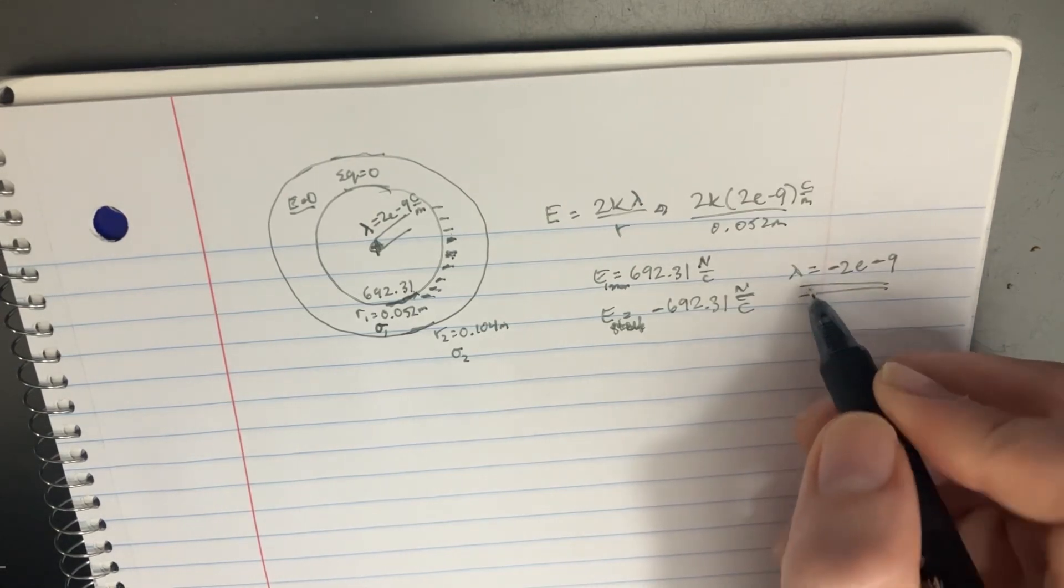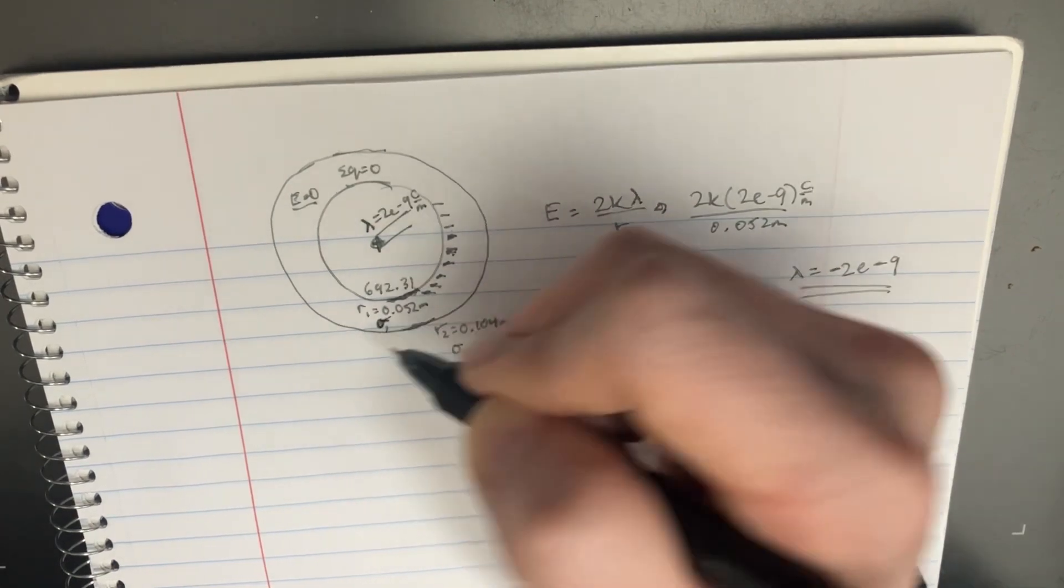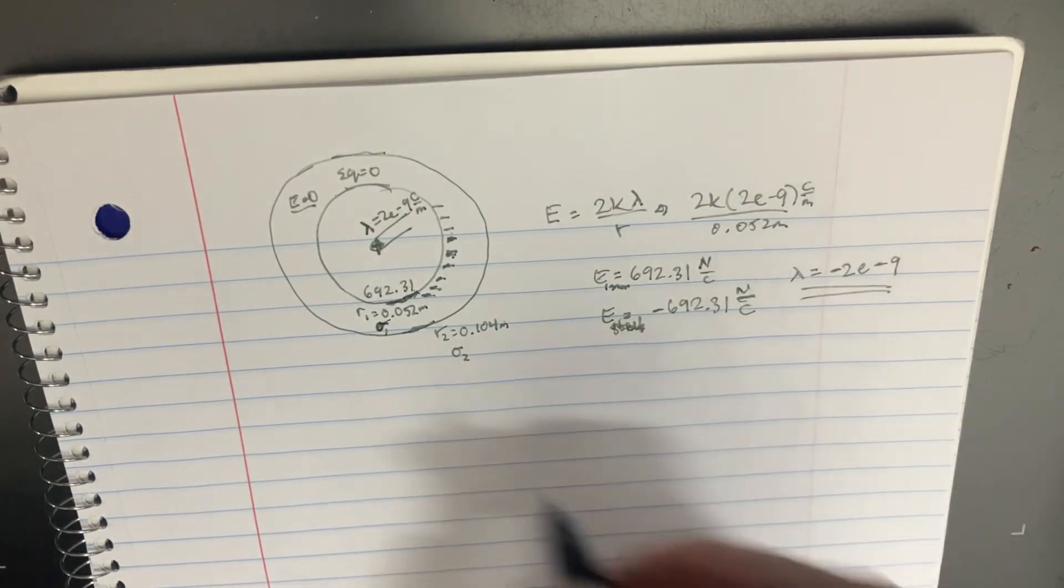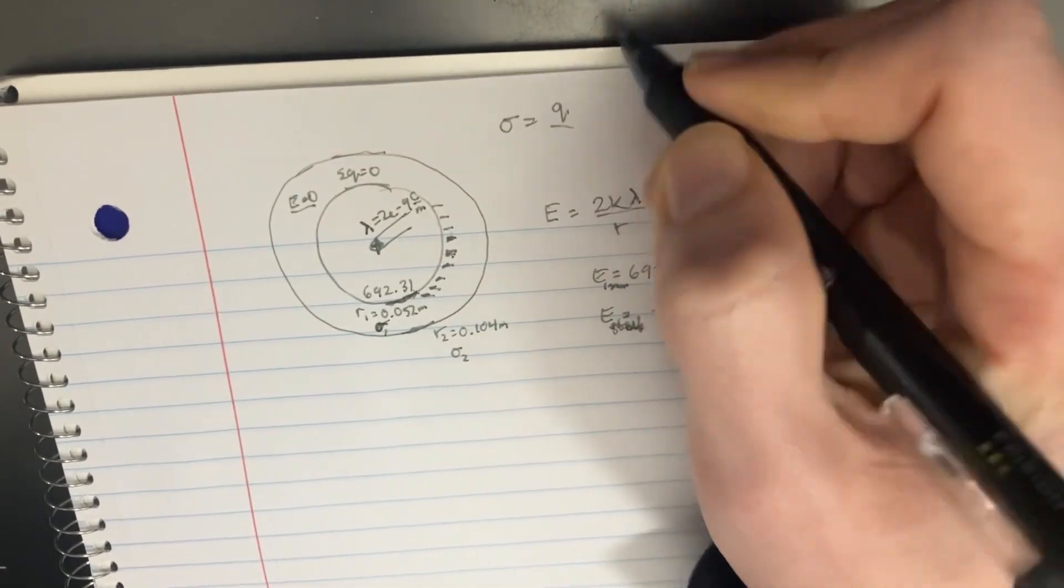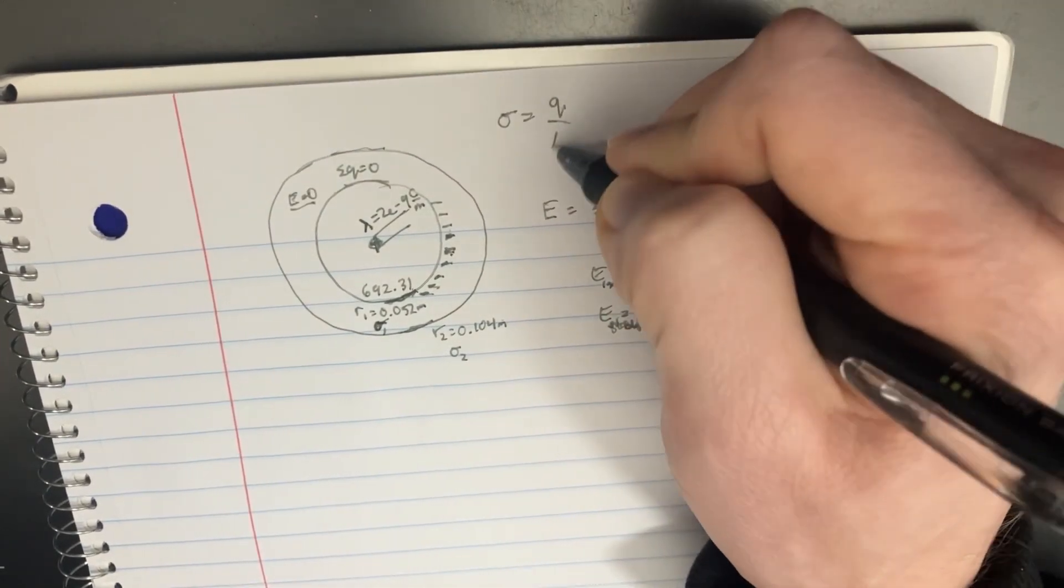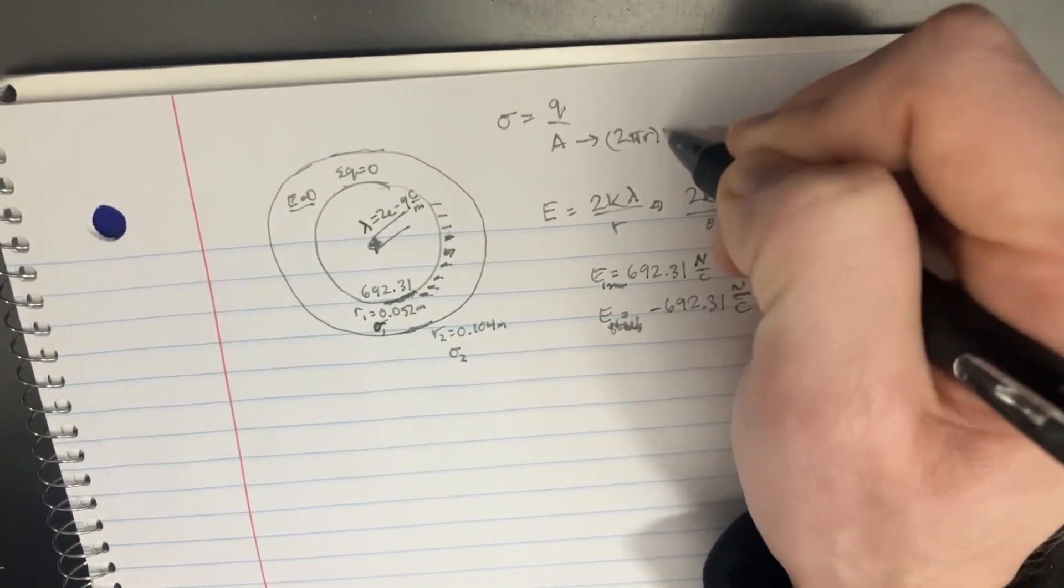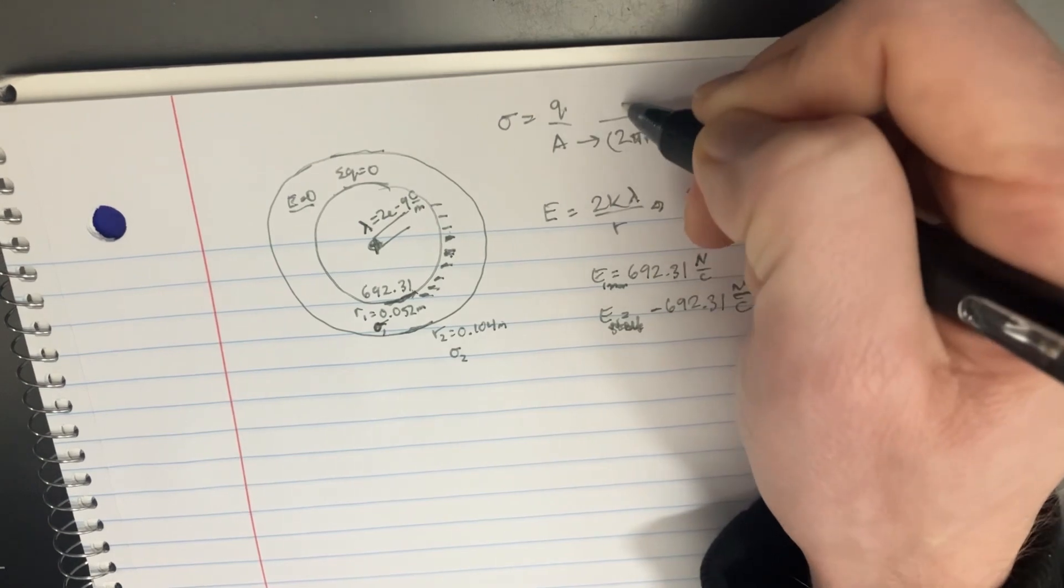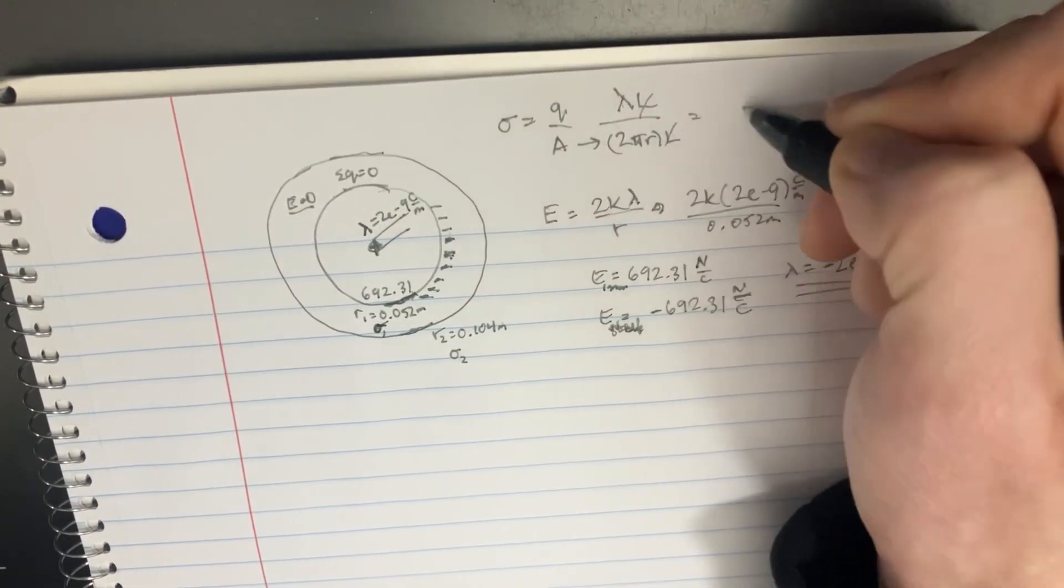So now that we have a negative surface charge, how can we relate that to this? Well, remember that this is supposed to be equal to Q over A. And A for the cylinder is 2 pi R times L. And this is supposed to be lambda times L. These will cancel. And so you get that this is equal to lambda over 2 pi R. We're going to use that equation to calculate the surface density.